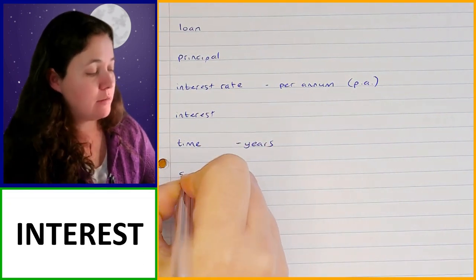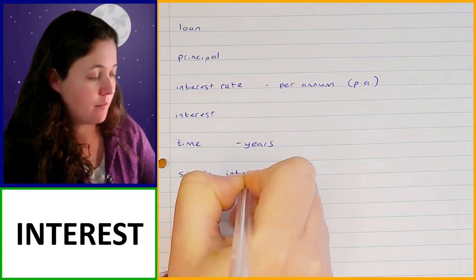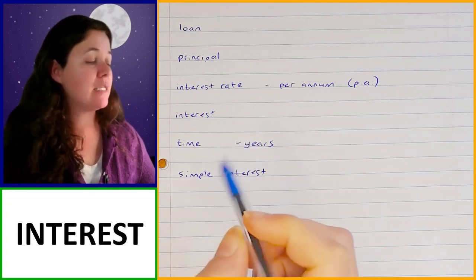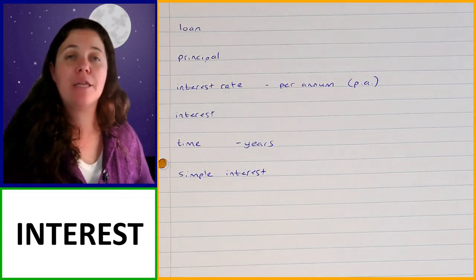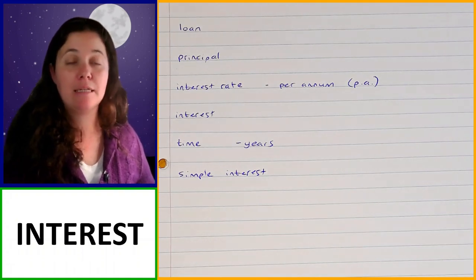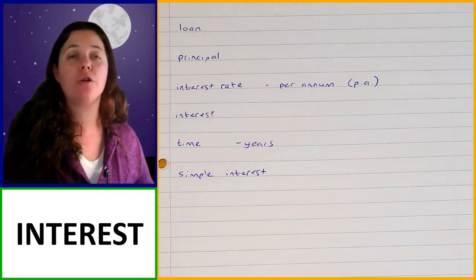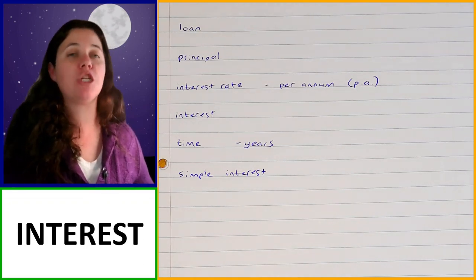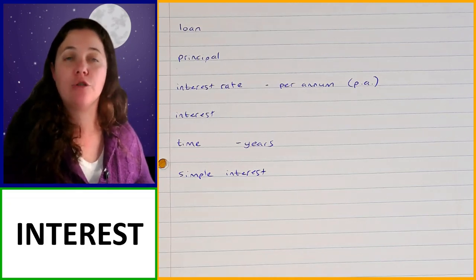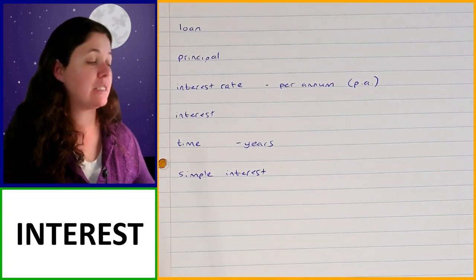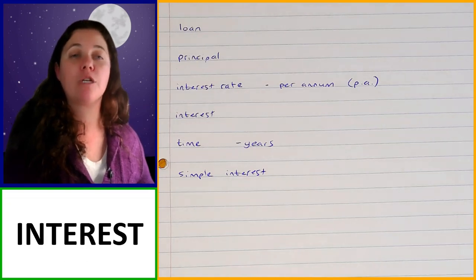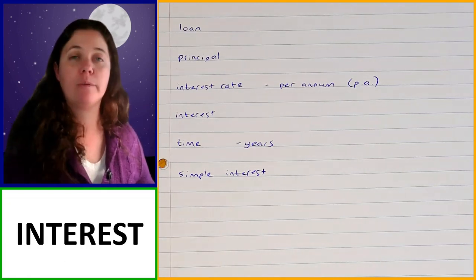Simple interest is the type of interest that we work with in grade 8. Simple interest is where you have your principal amount, and the interest is calculated based on that principal amount. Every year that same amount of interest is added — it doesn't change based on payments made or interest already added. Next year you'll start working with compound interest, but for now we're just working with simple interest.